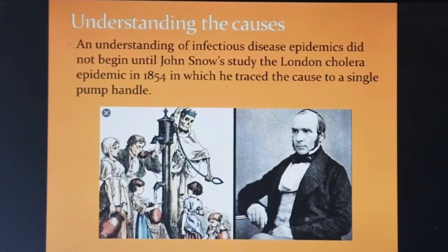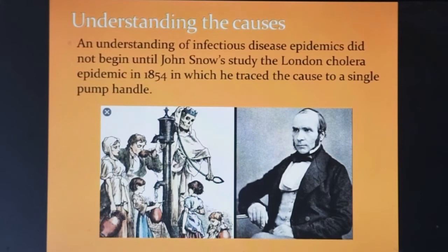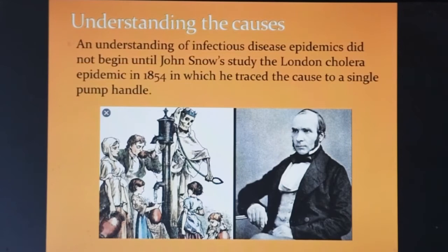The cause of infectious disease was not known until the mid-19th century, when John Snow studied an outbreak of cholera in 1854 and traced the cause of the outbreak to a single commonly used pump handle. This was the beginning of modern epidemiology that uses his technique to map the transmission of disease so it can be contained and stopped.